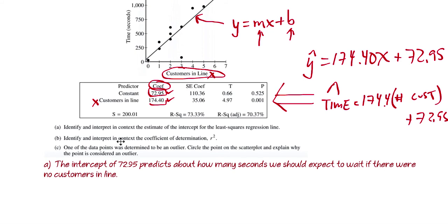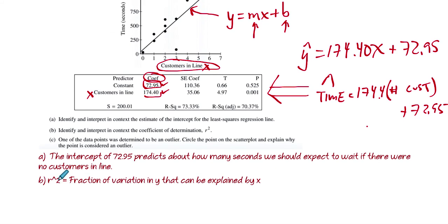Identify and interpret in context the coefficient of determination, which is r-squared. So r-squared is the fraction of variation in y that can be explained by x.